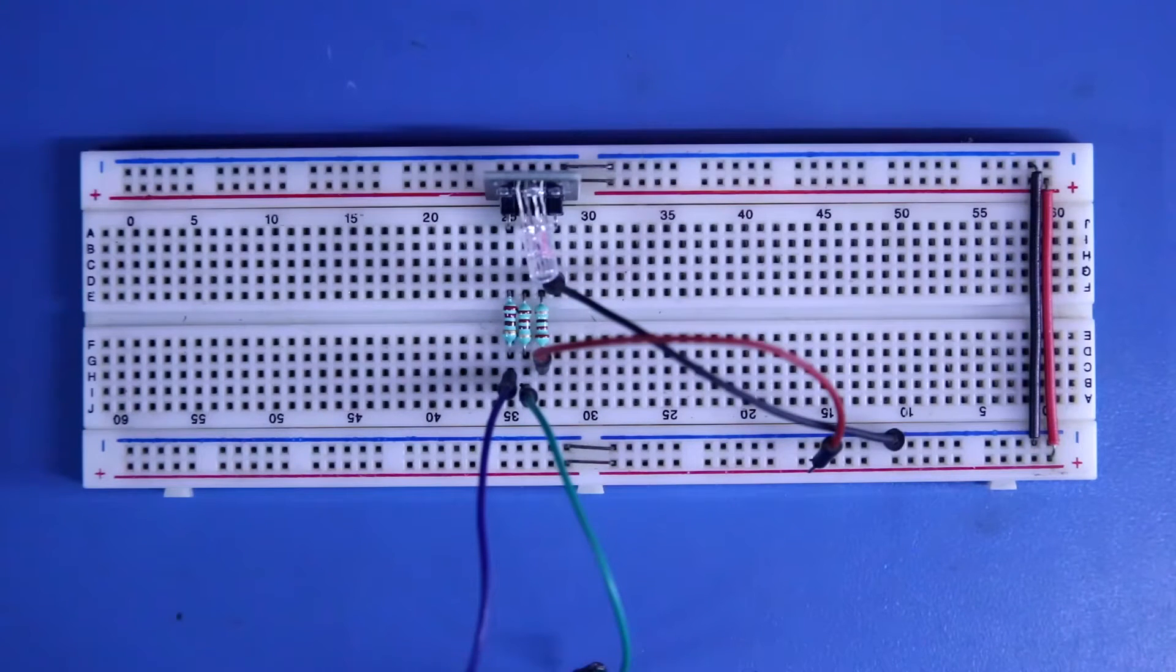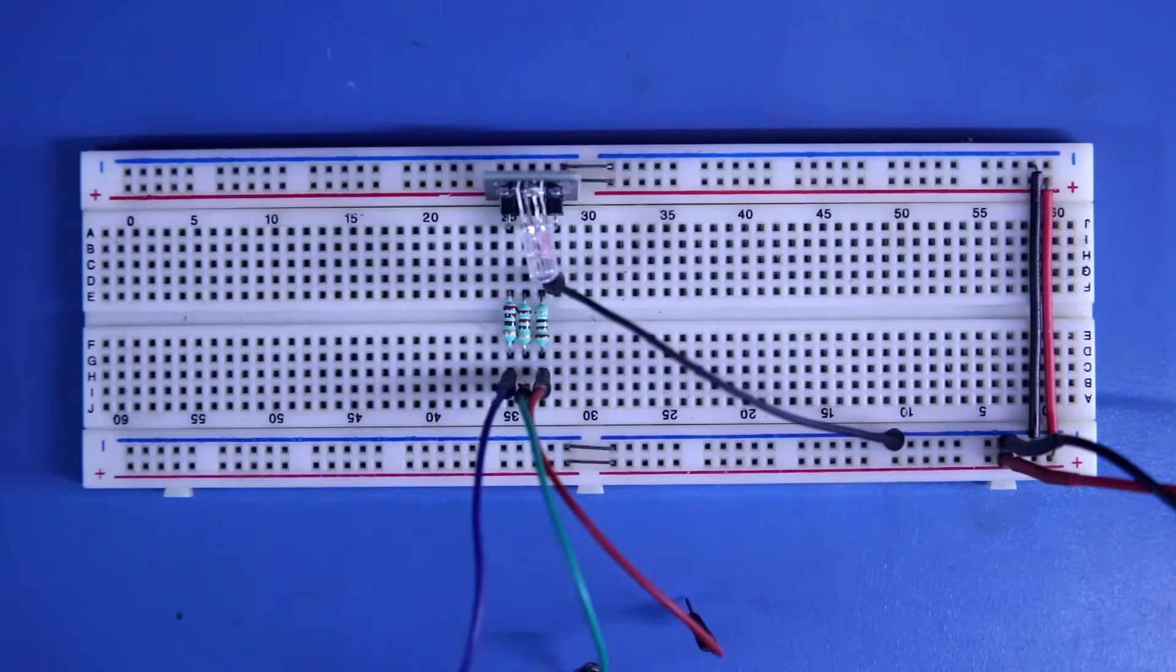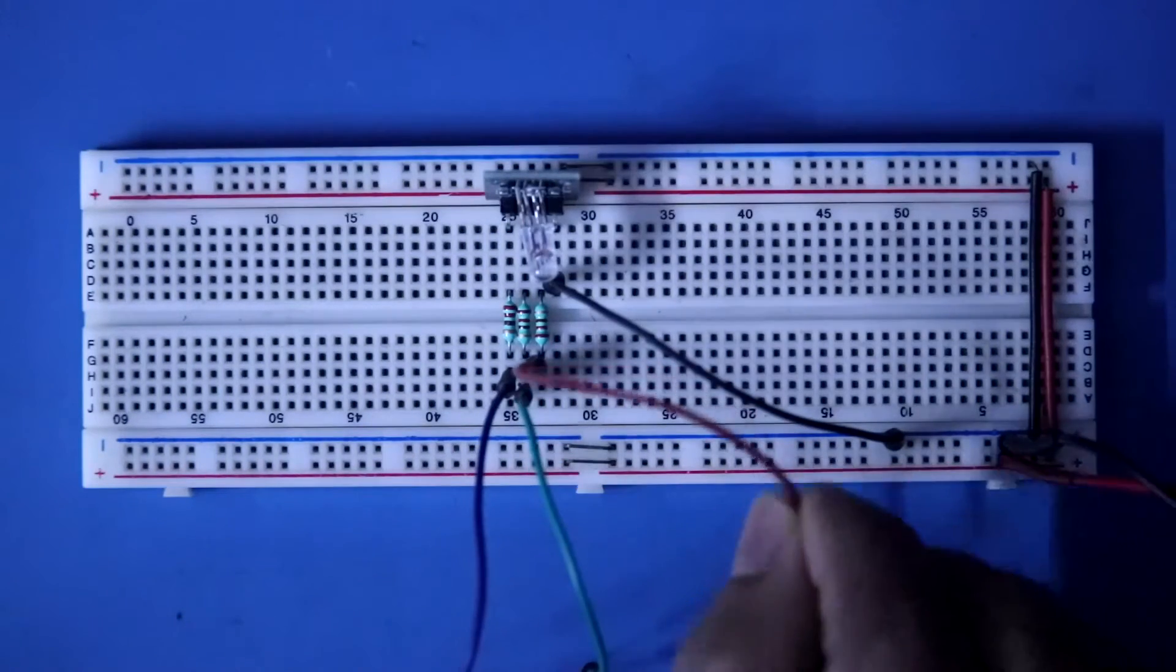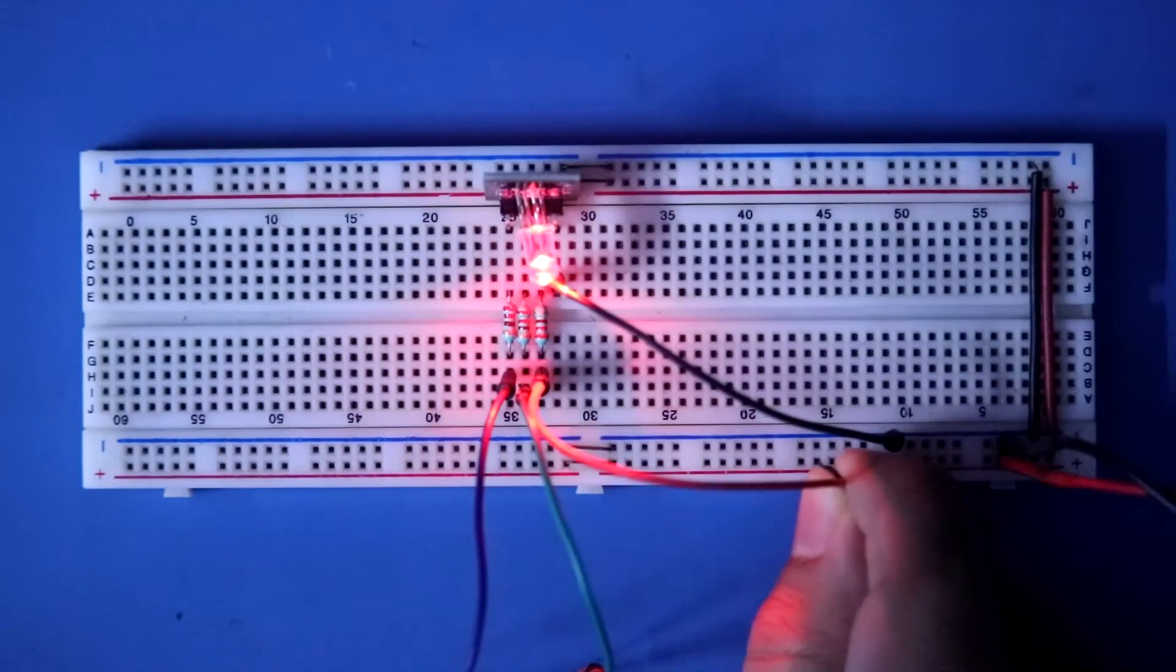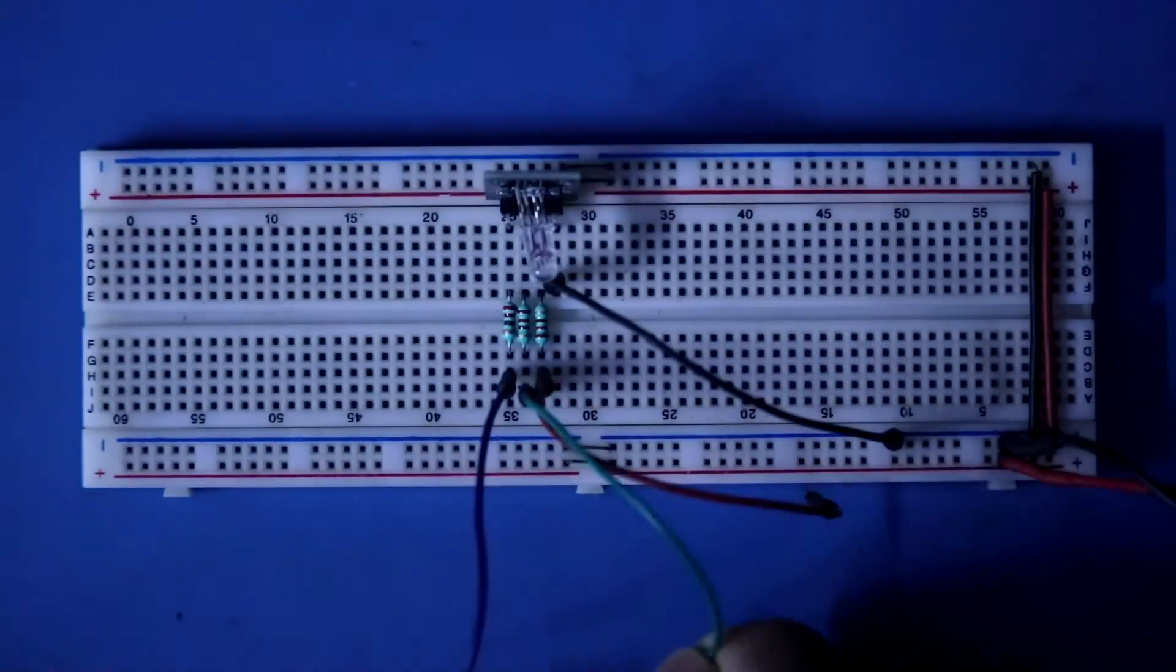Connecting 5V power supply. Turning off my lights. This is R, G, and B.